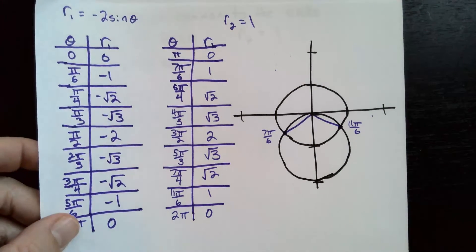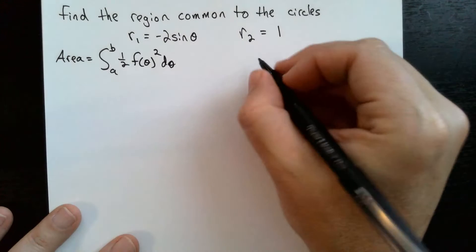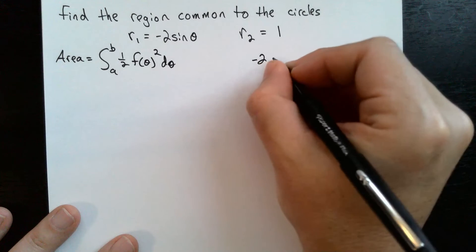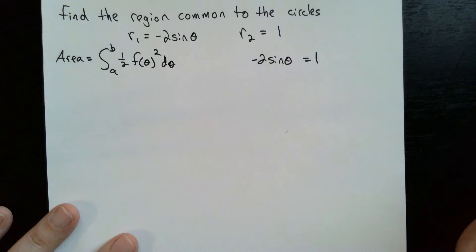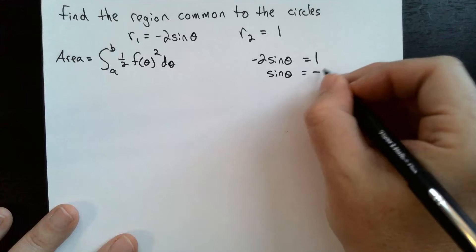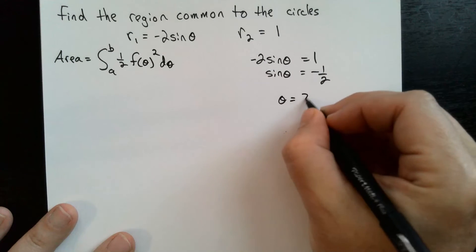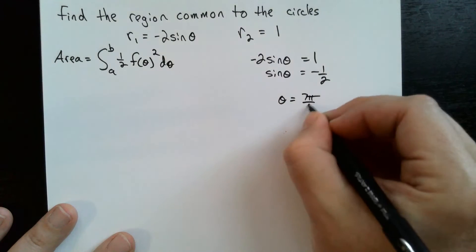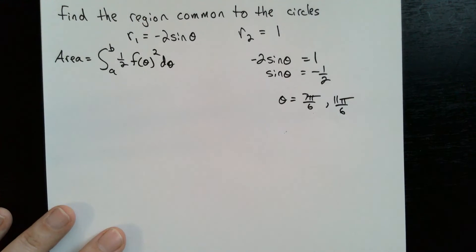Let's set that up. First we need to find the intersection points — I said they were 7 pi over 6 and 11 pi over 6, so let's figure out how. We set negative 2 sine theta equal to 1, which gives sine theta equal to negative one half. Looking at the unit circle, that happens at theta equals 7 pi over 6 and 11 pi over 6. Those are the intersection points.